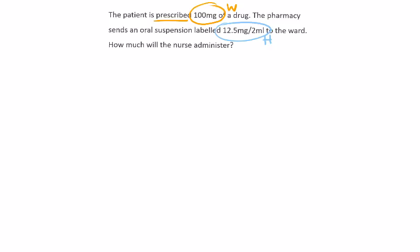Using the formula method, we would write: what we want, divided by what we have, multiplied by the third quantity — in this case it will be the volume, but it could also be tablets.